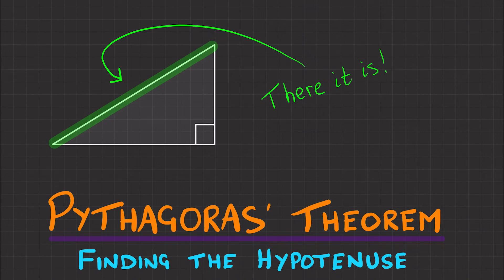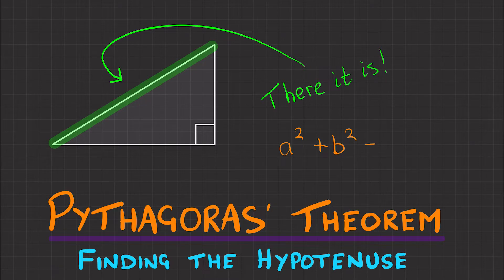Using Pythagoras' Theorem, let's find the hypotenuse of a right angle triangle. As a quick reminder, Pythagoras' Theorem is: side a squared plus side b squared equals side c squared.